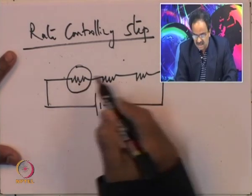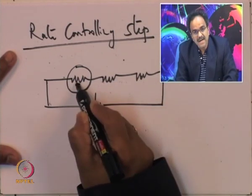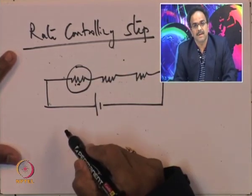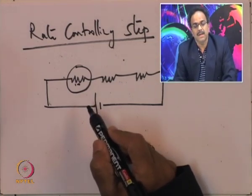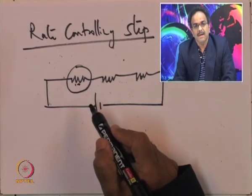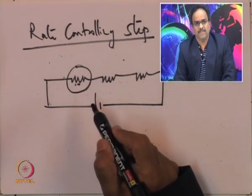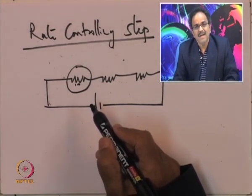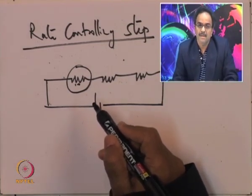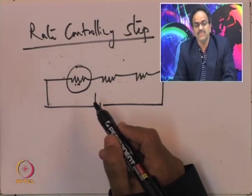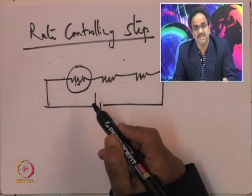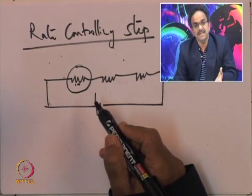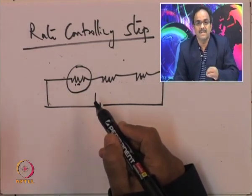In short, the rate controlling or rate determining step is the step which is intrinsically very slow. The rate constants determine whether a step is slow. If the rate constant for the surface reaction is very small, chemical reaction controls. If the rate constant for adsorption is very small, adsorption controls the overall rate.